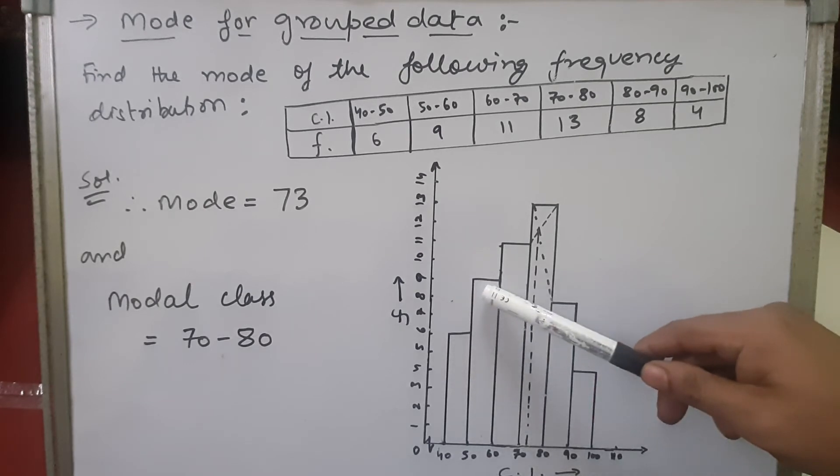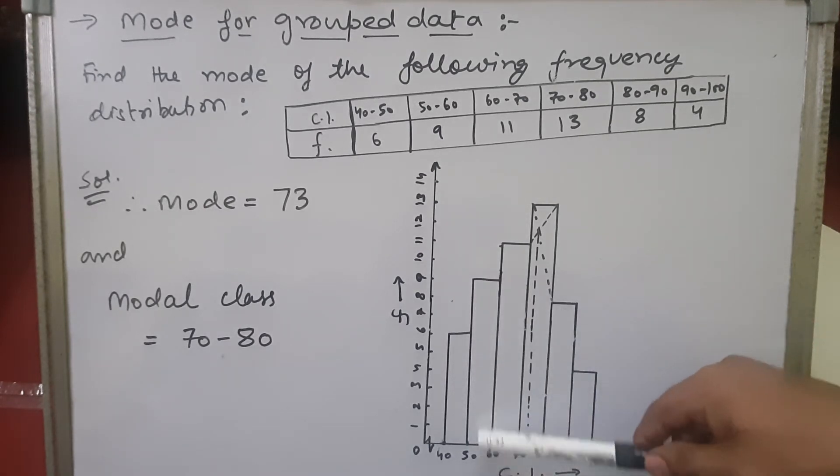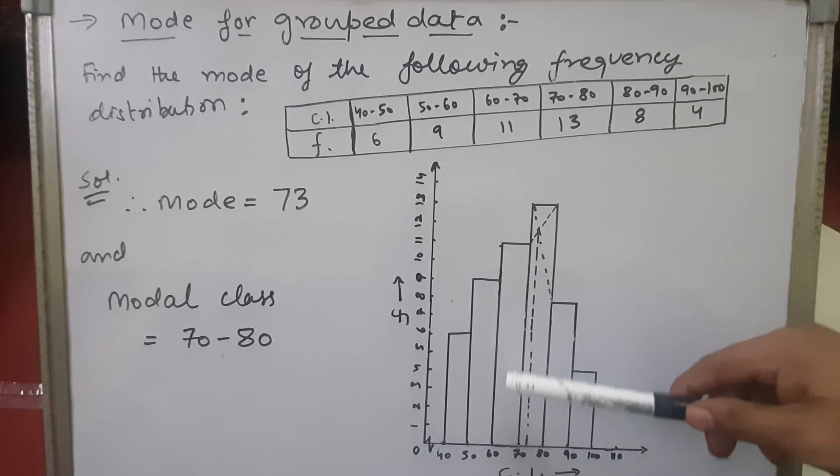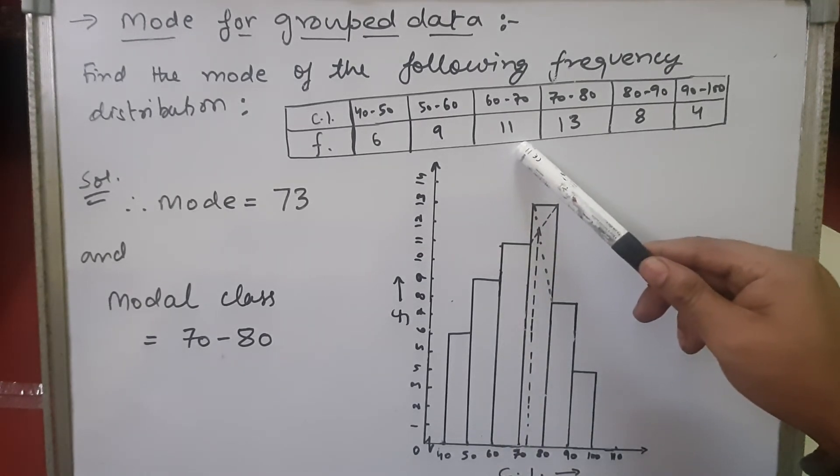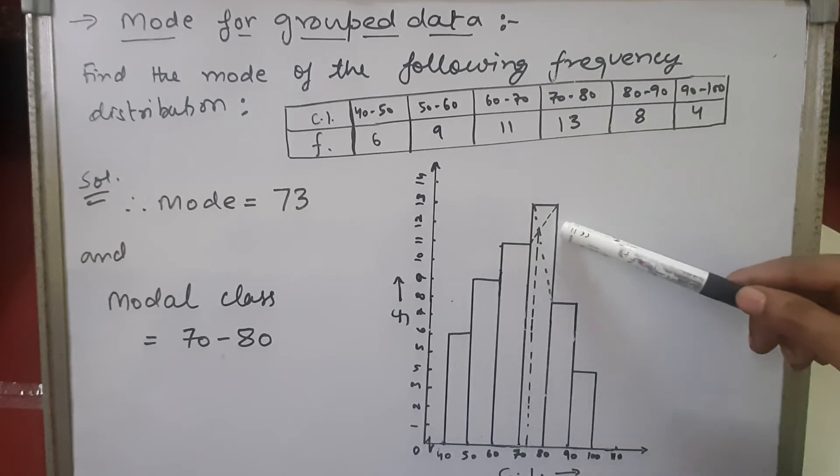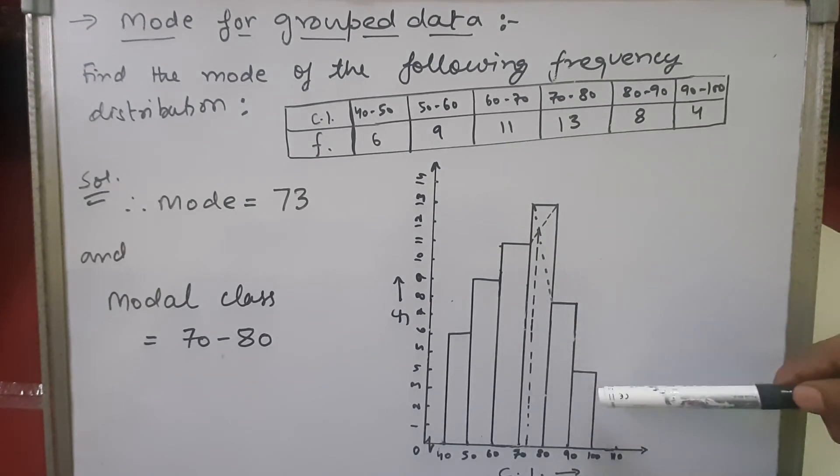The height of this rectangle or the length of this rectangle is 9. The length of this rectangle is 11, because for class interval 60 to 70, the frequency is 11. And this one is 13, this one is 8, this one is 4.